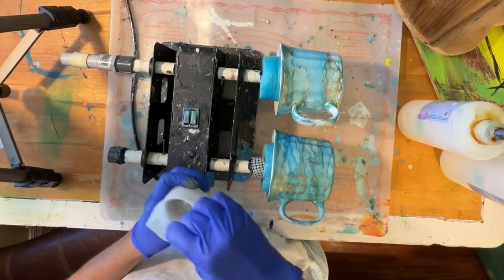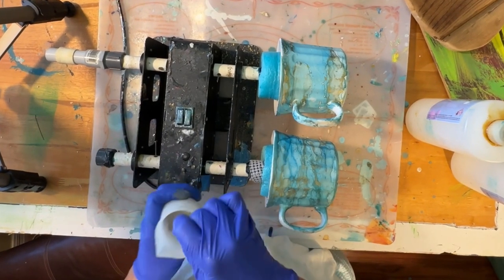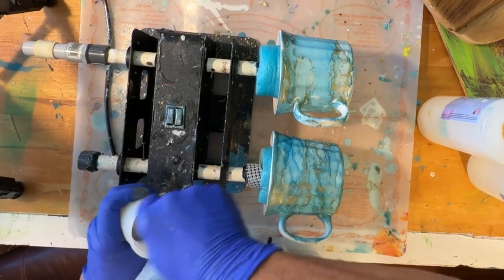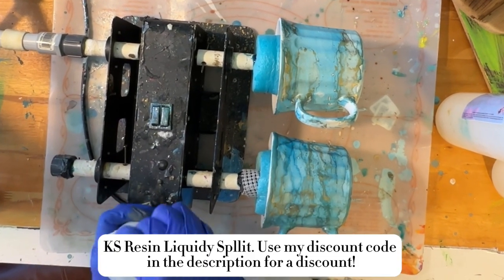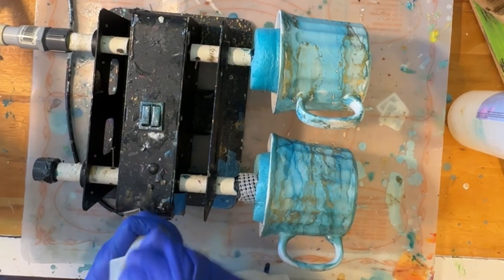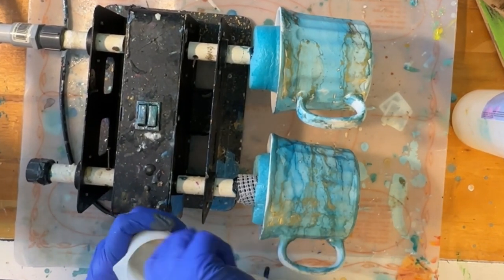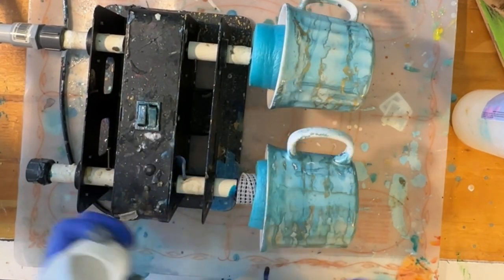After these sat overnight, it is time for resin. I will say if you are going to seal these with resin, like I'm doing, you really do need to spray with some clear spray. I used Rust-Oleum matte. Otherwise the resin will cause the alcohol to run.